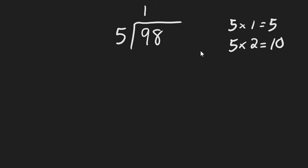So 5 goes into 9 one time with a leftover of 4. Drop down the 8, and so 48 divided by 5 is what?